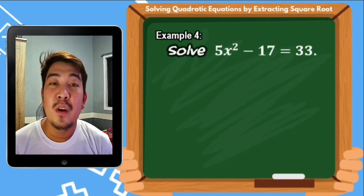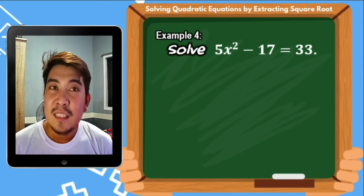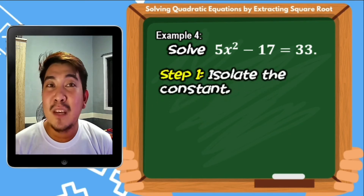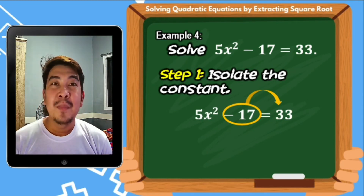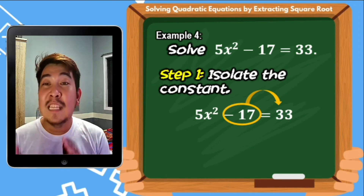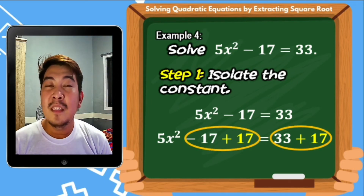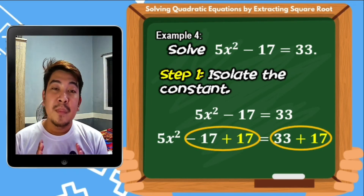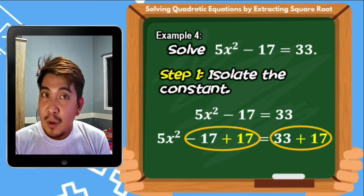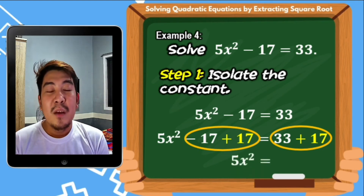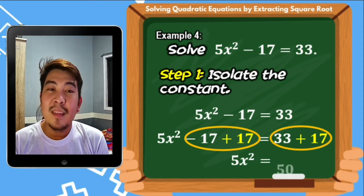Example number 4: solve 5x squared minus 17 equals 33. Step number 1: isolate the constant — that is negative 17. We need to move negative 17 to the other side with 33. Using the addition property, we transpose negative 17 by adding positive 17 to both sides. Negative 17 plus 17 equals 0, so the left side becomes 5x squared, and 33 plus 17 gives us 50.